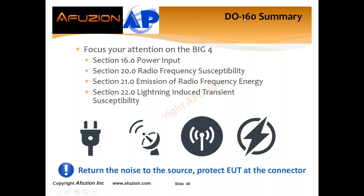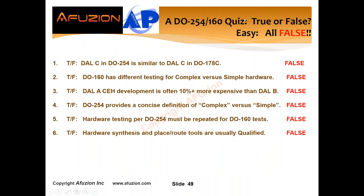Thanks, Patrick — a terrific explanation. Now the quiz answers. Number one: DAL-C in DO254 is similar to DAL-C in DO178 — that's false. DAL-C is mostly black box in DO254 but fully white box in DO178. Number two: DO160 has different testing for complex versus simple hardware — that's false. DO160 is LRU-based environmental testing; we don't look at complex versus simple hardware — that's part of DO254. Number three: DAL-A complex electronics hardware CEH is often 10% or more expensive than DAL-B — also false, they're actually the same.